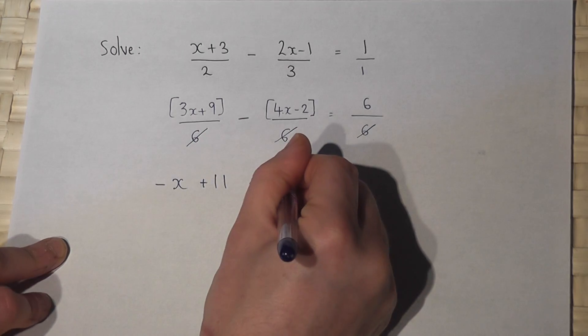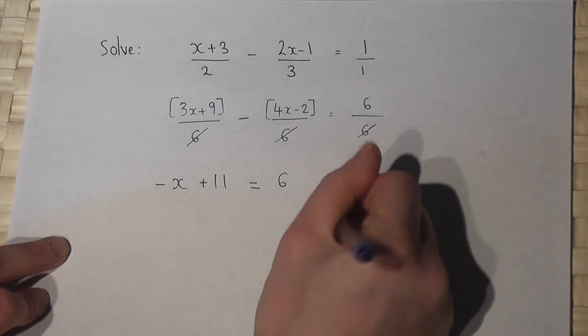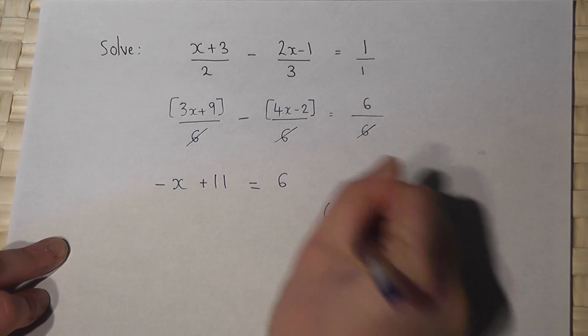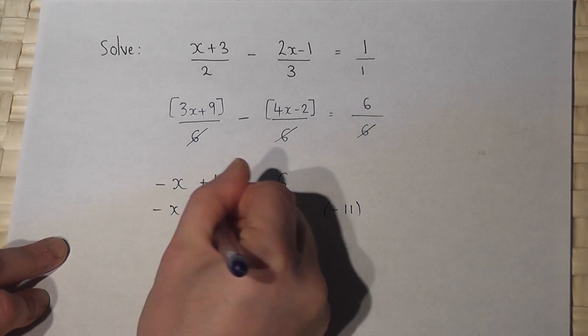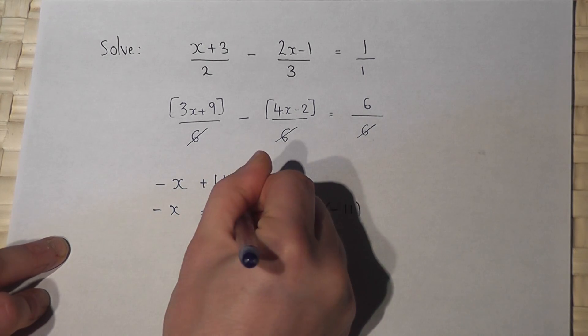And it's this, which equals six. And then take away 11 from both sides. So minus x equals six, take 11 is minus five.